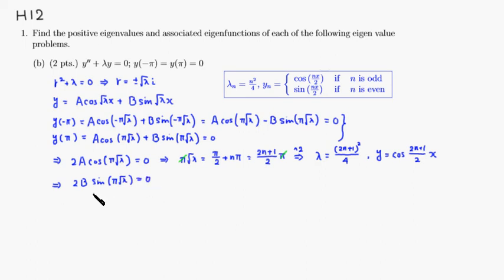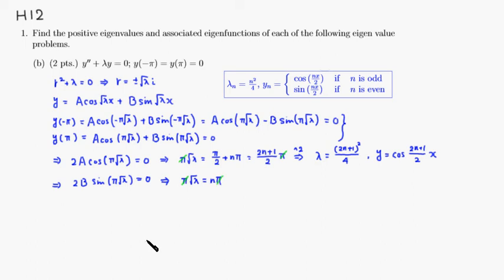If sine of pi times square root of lambda is zero, then B doesn't have to be zero, so you can get a nonzero B value. The angle that makes sine equal to zero is any multiple of pi. Canceling pi and squaring both sides, the eigenvalue for this case is N squared, which can also be written as 4N squared over 4.